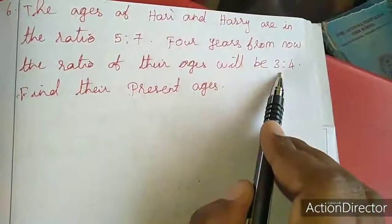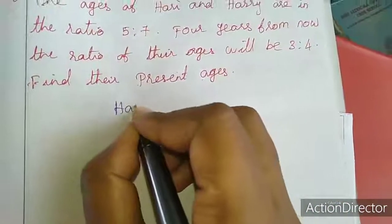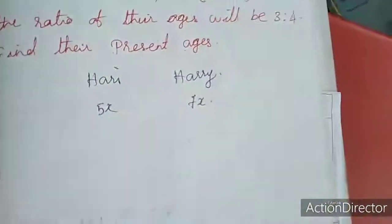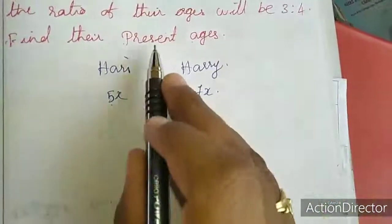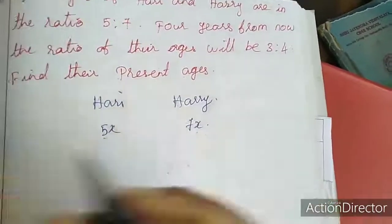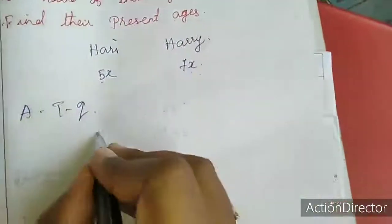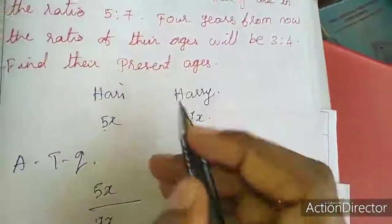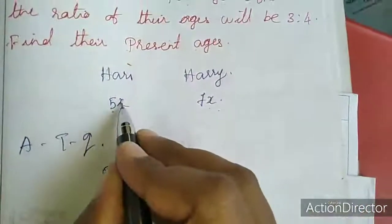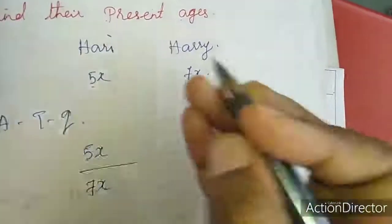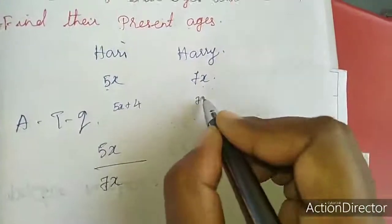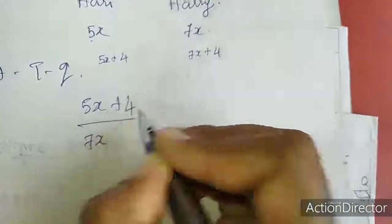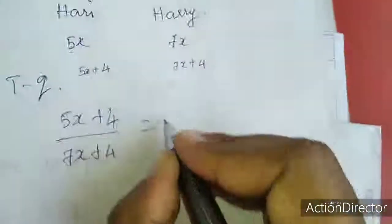In this problem, both conditions give a ratio. So first I am going to take Hari's age. Since the ratio is 5 is to 7, let their ages be 5x and 7x. These are the values we want to find — the present ages. Four years from now, their ages become 5x plus 4 and 7x plus 4. After that, the ratio of their ages will be 3 is to 4, so we write: 5x plus 4 divided by 7x plus 4 equal to 3 by 4.